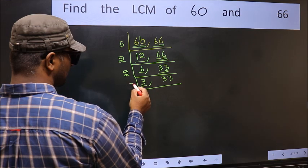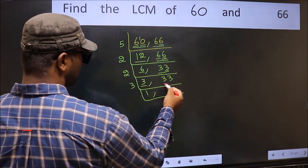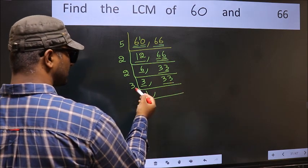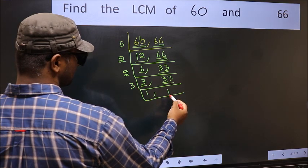Now here we have 3, 3 is a prime number, so 3 once is 3. The other number 33 is divisible by 3. First number 3, when do we get 3 in 3 table? 3 once is 3.